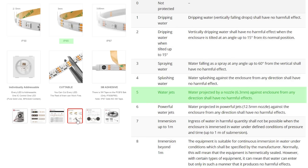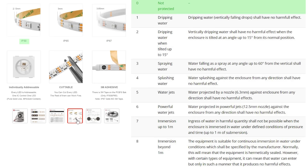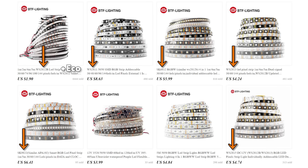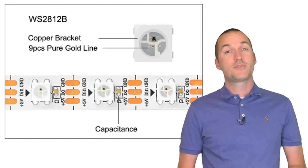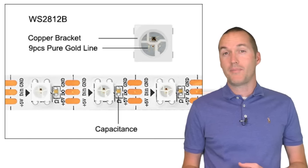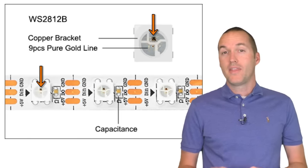If you require more waterproofing you can choose the IP67 version that comes in sealed silicon sleeves, but keep in mind that they do get a bit annoying if you need to cut the strips to length. Of course if your project is indoors then you won't need any waterproofing and that option is available as well. The last choice you need to make is the specific chip that will drive your individually addressable LEDs. This chip is where each of the strips gets their name and I'll specifically be working with 7 chip types today. These LED strips all work with the same basic principle.